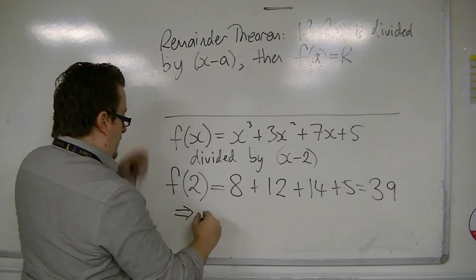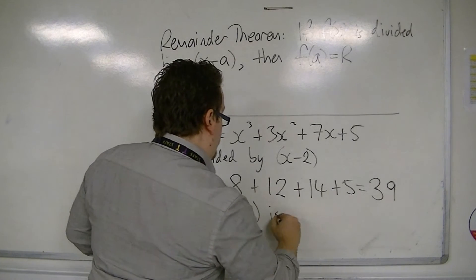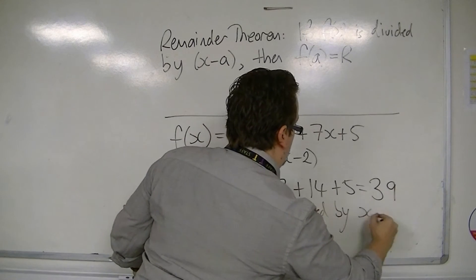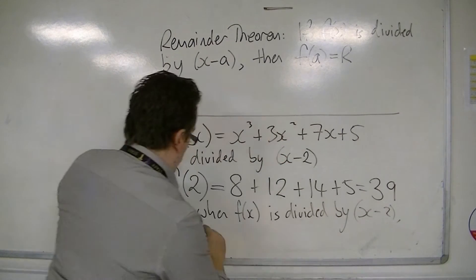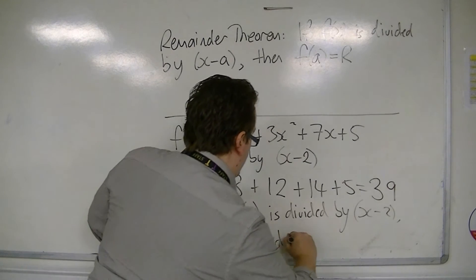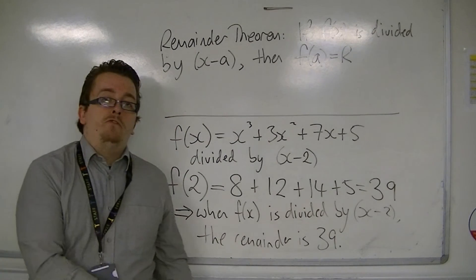This implies that when f(x) is divided by x minus 2, the remainder is 39. So this is the remainder theorem.